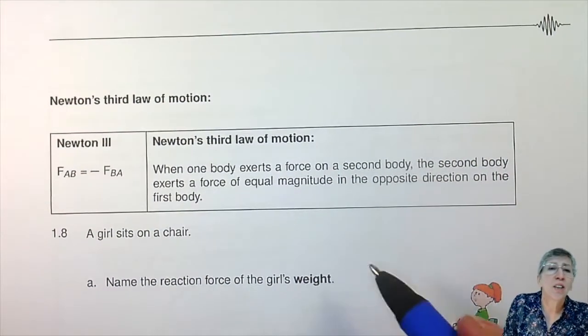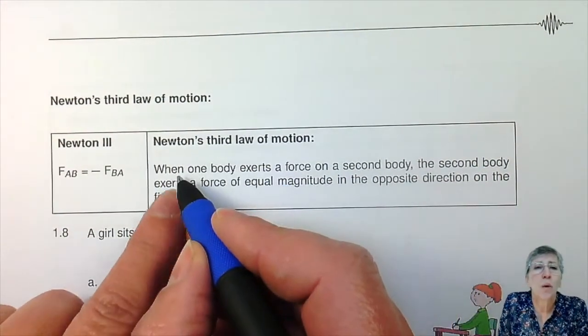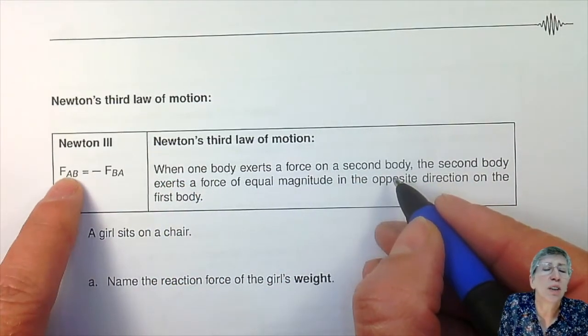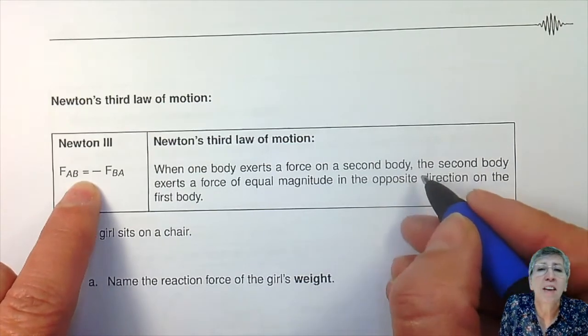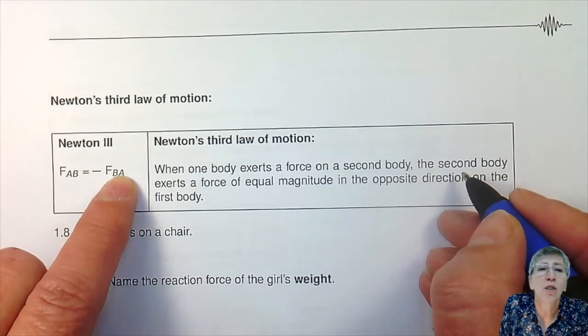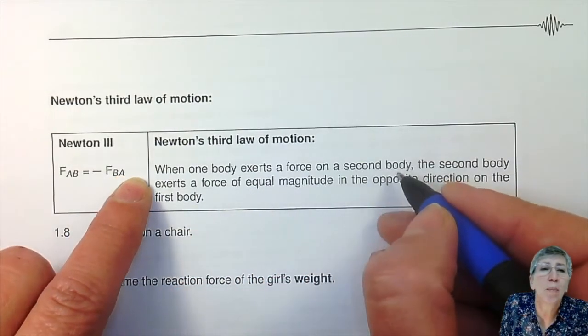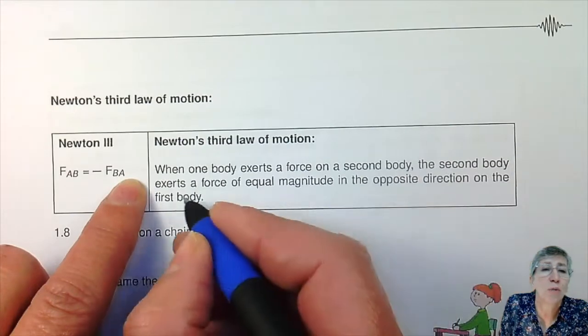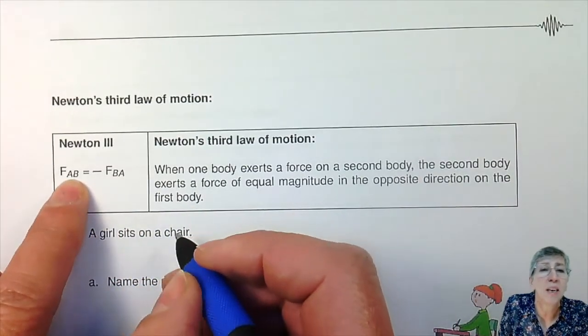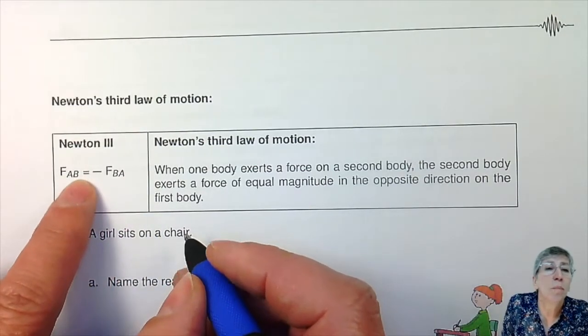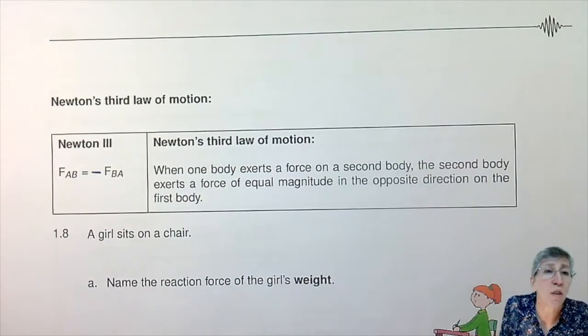We are now going to look at Newton's third law, and the third law is a lot different from the other two. When one body exerts a force on a second body — say object A exerting a force on B — then the second body B will exert a force equal in magnitude in the opposite direction on the first body. So if A is exerting a force on B, B will be exerting a force on A with equal magnitude but in the opposite direction.